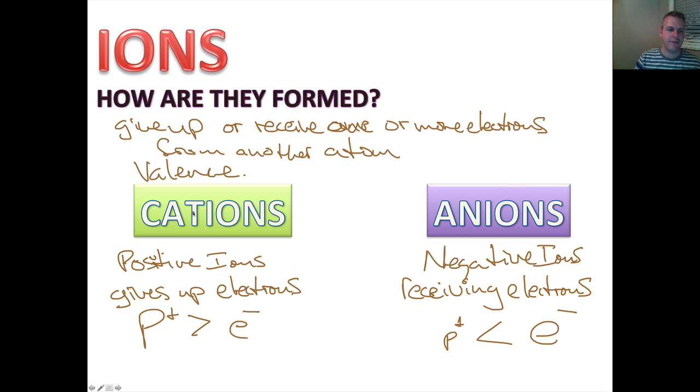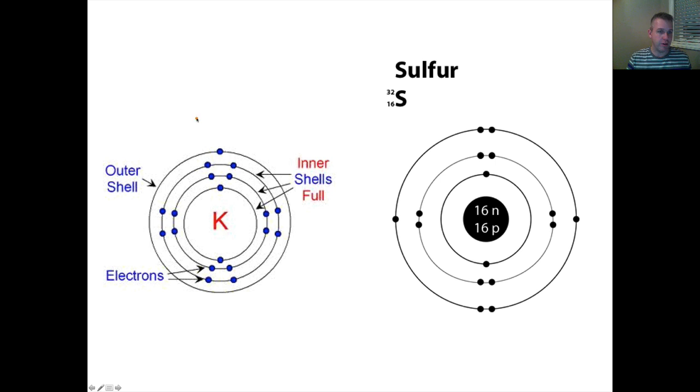With cations, we're going to have a net positive charge. The easy way to remember this is there's a T in the middle of cation, which makes this positive. So we're going to take a closer look as to how these ions themselves are formed.